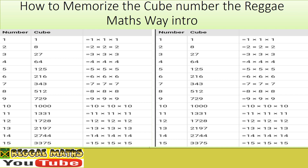A cube is when you times a number by itself three times. The cube of one is one times one times one. Say it again: the cube of one is one times one times one, which equals one. One. The cube root of one is one.